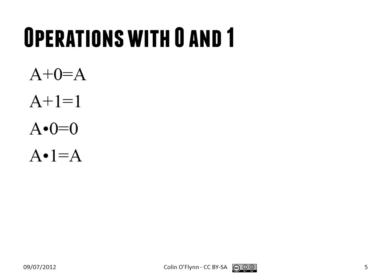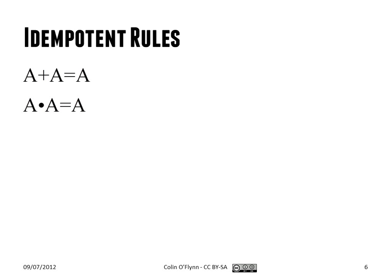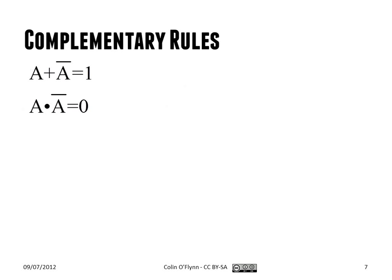A lot of these rules come about logically by thinking through what we already know about gates. For example, starting with an OR gate: if you OR zero with any input, the output will just be the same. Likewise, if one of the inputs is always one, the output will always be one regardless of what A is. We can also build rules for when the same input goes to both legs of the gate — the output just follows that input.